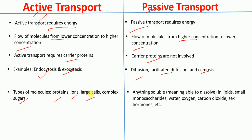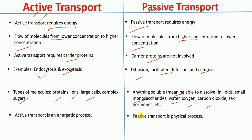In active transport, the types of molecules transported include proteins, ions, large molecules, and complex sugars. Whereas in passive transport, the types of molecules transported include anything soluble in lipids, small monosaccharides, water, oxygen, carbon dioxide, sex hormones, etc.